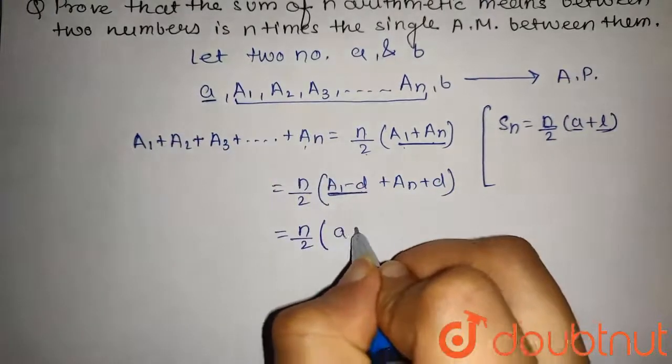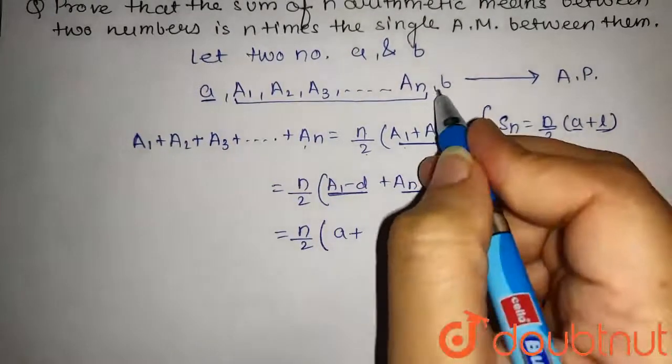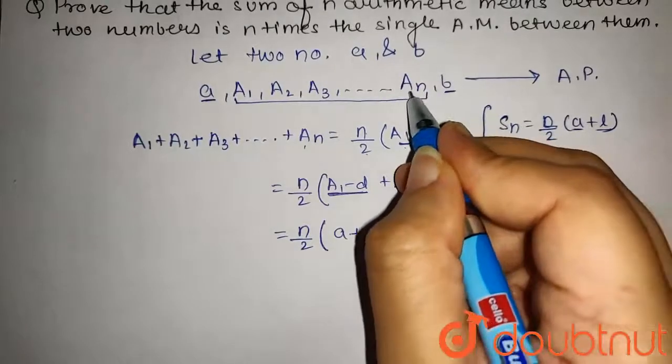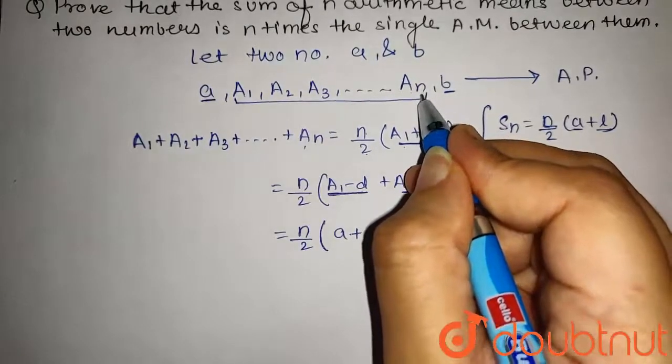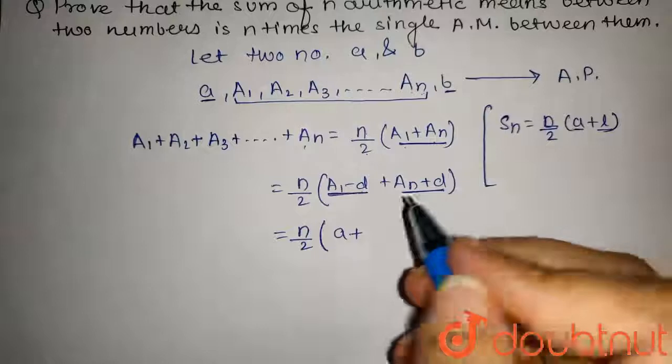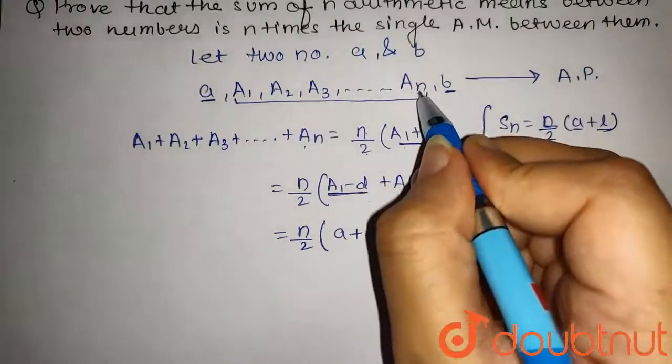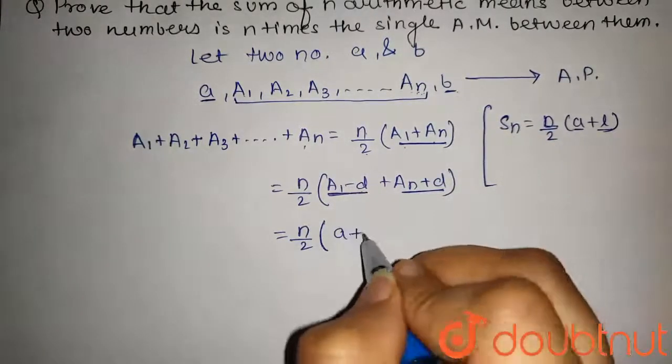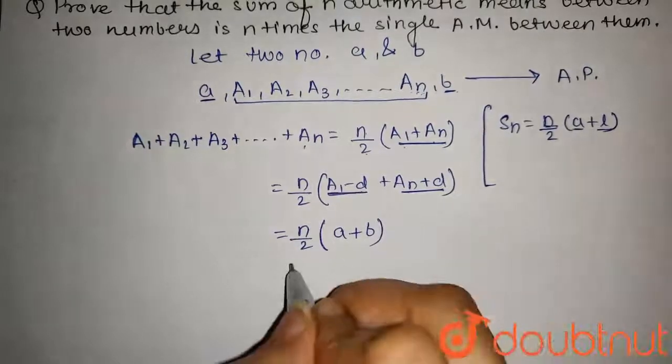So it will be a plus Aₙ plus d, that is b. The succeeding term to Aₙ is b, so it will be a plus b here.